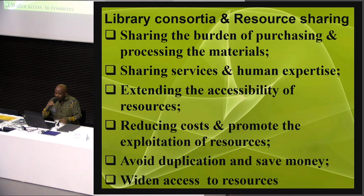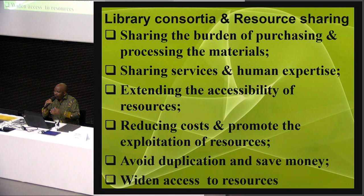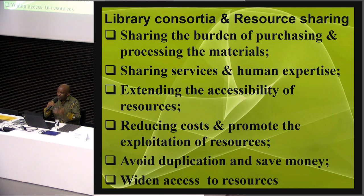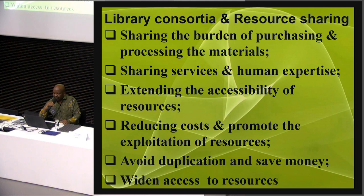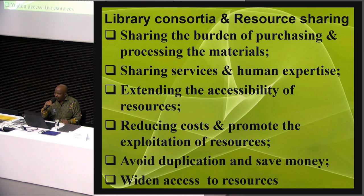We have basically two library consortia — one dealing with purely academic libraries, and others also looking at what we call pro-academic, technical, and vocational institutions. We're looking at the sharing of services, human capital, extending the accessibility of resources, democratic access to information, and also reducing costs and promoting the optimum usage of resources in support of scholarship. Also, to prevent duplication of effort, so that where we have one library doing its own thing, that becomes a waste of resources. Our statement of the problem is that we have consortia, but we don't have a consortium that looks at nationwide access.